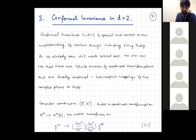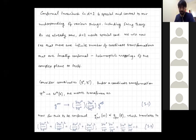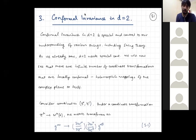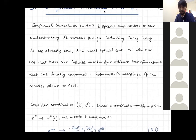If there are no immediate questions, I'll go ahead. Let me also mention that in between, if you have problems regarding anything and want to talk to me about something, just drop me an email and we should be able to chat. So in this lecture and the following few lectures — basically most of the course from now on — we are going to be interested in conformal invariance in d equal to 2. As I stressed earlier, conformal invariance in d equal to 2 is actually special and central to our understanding of various things, including string theory. We have already seen that d equal to 2 actually needs special care, and we will see that there are actually an infinite number of conformal transformations that are locally conformal.